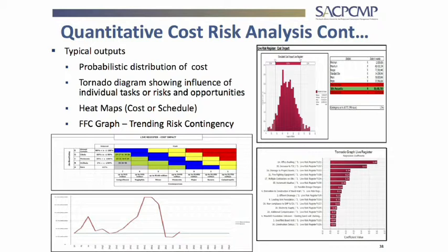On a heat map you can have two versions: schedule or cost. It shows the likelihood of the risk happening and the consequence — either in monetary value or schedule. The red ones indicate high likelihood and significant impact. For example, a maximum 10 million monetary impact or a 12-week schedule overrun. Everything runs off the simulation and they all tie up.